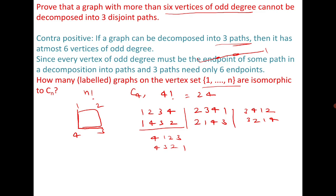Therefore, out of 24, if I divide by 8, there are 3 non-isomorphic labeled cycle graphs of length 4. In the case of Cn, it should be n factorial divided by 2n. This is how we get the number of non-isomorphic labeled cycle graphs of order n.